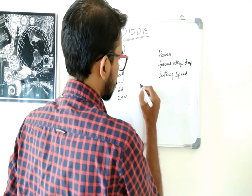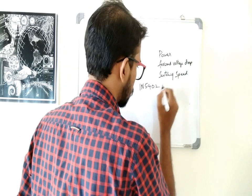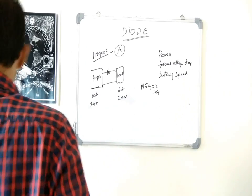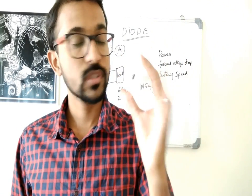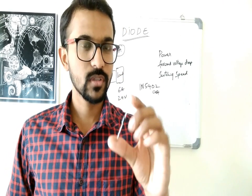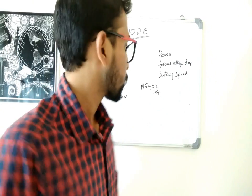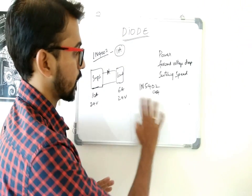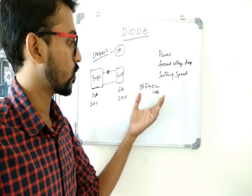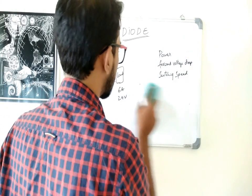One of the simple power diodes I would say is the 1N54 series — usually 1N5402 or similar. The one I showed you is a 1N5402, a power diode. I think it can handle a current of about 5 to 10 amps — I'm not very sure about the datasheet. This can handle high current, so in applications where I am using high current, I will go for something like this, which is a power diode.